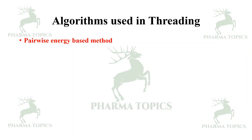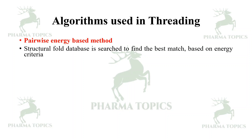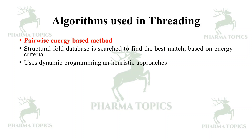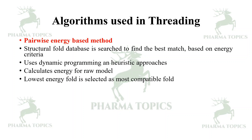There are two algorithms used in threading. The first is the pairwise energy-based method: a structural fold database is searched to find the best match based on energy criteria. It uses dynamic programming or heuristic approaches to calculate energy for a raw model, and the lowest energy fold is selected as the most compatible fold.